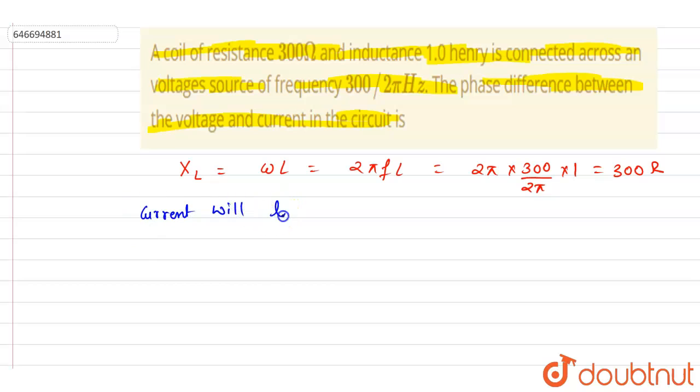Current will lag by tan inverse of XL by R. So if you see, this will be XL and this will be R. So XL by R. So if I write down the phi,